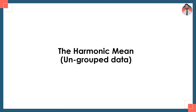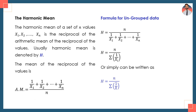First of all I will explain the definition of the harmonic mean. The harmonic mean of a set of n values x1, x2, ..., xn is the reciprocal of the arithmetic mean of the reciprocals of the values. So you will use the reciprocal of the values: 1/x1 plus 1/x2 plus ... plus 1/xn. You add the reciprocals, divide them — that is the arithmetic mean of the reciprocals — and then take the reciprocal again. This is called the harmonic mean.